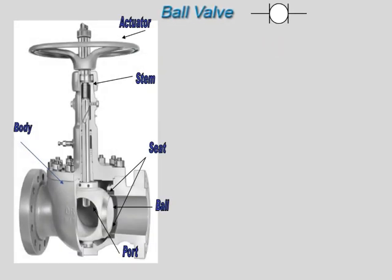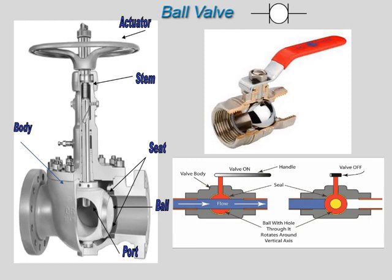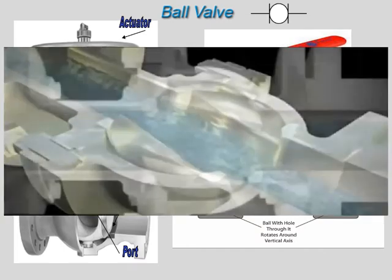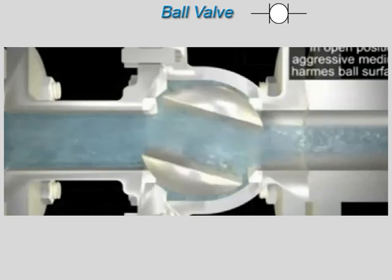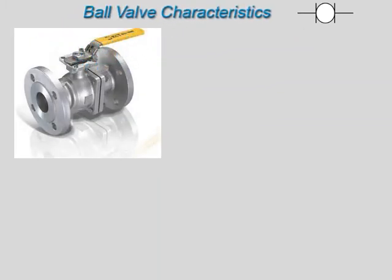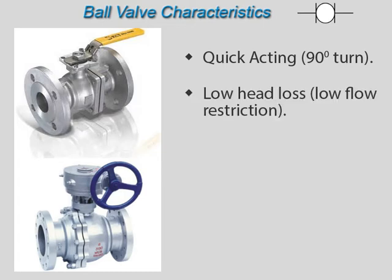A ball valve is a rotational motion valve that uses a ball-shaped disc to start, stop, or throttle fluid flow. The valve is opened by aligning the ball port with the valve body inlet and outlet. The valve is fully closed when the ball is rotated 90 degrees so that the port is perpendicular to the flow openings of the valve body. Most ball valve actuators are the quick-acting type, requiring only a 90-degree turn of the handle to operate the valve. For large ball valves, the ball can be difficult to turn and may have actuators with mechanical assistance. The main advantages are quick-acting quarter-turn on-off operation, very little flow restriction when open, and positive flow isolation with low torque. The main disadvantage is that conventional ball valves have relatively poor throttling characteristics.